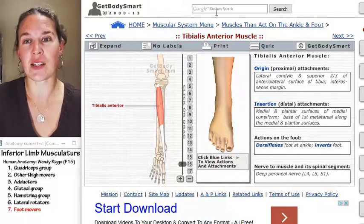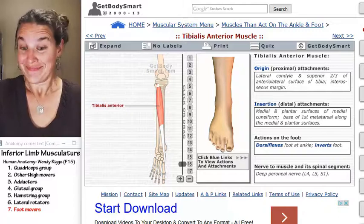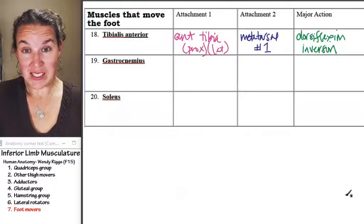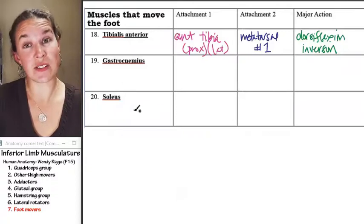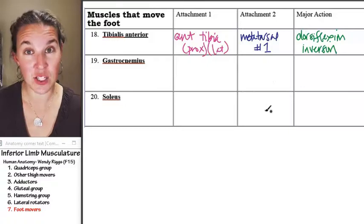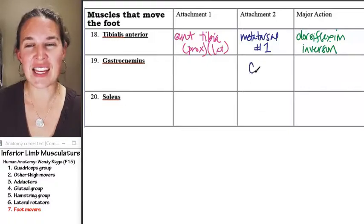That's our anterior leg muscles. We've got two posterior leg muscles. These two share a distal attachment on the calcaneus.